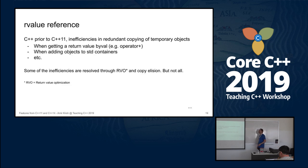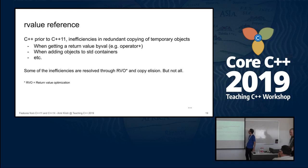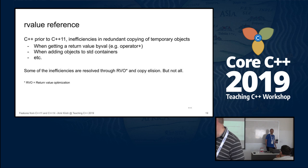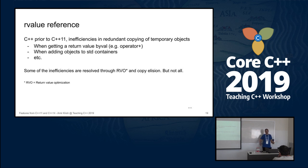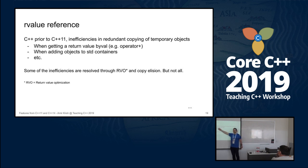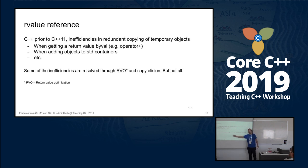Prior to C++11, there were inefficiencies from redundant copying of temporary objects. When a temporary object is being copied to another, and the temporary is about to be destroyed, the only possible way was to actually copy — even though as a programmer you knew it would be destroyed. When returning a value from a method by value, there's no other way in some cases. Adding objects to a container also causes copying.